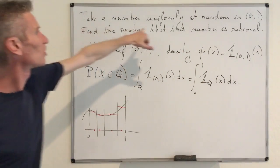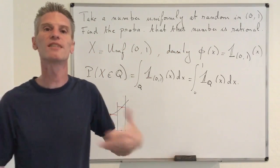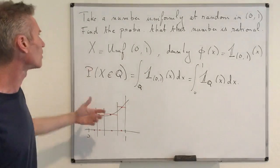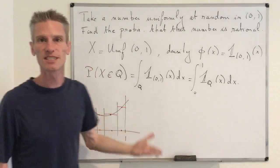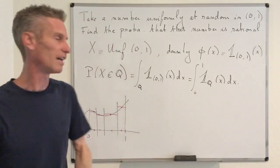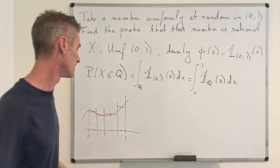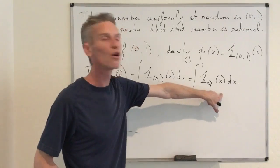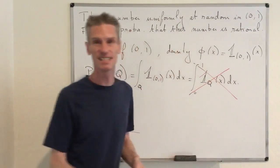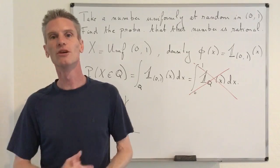So, going back to the original problem — take a number uniformly at random in [0,1] and find the probability that it is rational — this seems like a perfectly well-posed probability question and we should get a number between 0 and 1. However, if you apply the basic concepts of undergraduate probability theory and use the Riemann integral, you end up having to compute an integral that doesn't even exist. This probability is not just hard to compute — it is not even well defined.